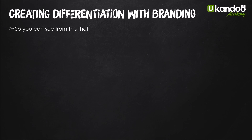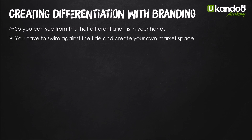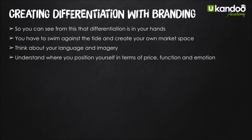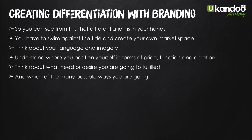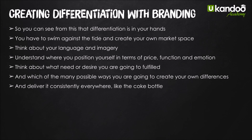Differentiation is completely in your hands. You have to swim against the tide to create your own space in the market. Think about your language, your imagery, and how you're going to make your brand different. Understand where you position your brand in terms of price, function, and emotion. Think about what desire or need you're going to fulfill, and which of the many possible ways you'll use to create your differences. They don't need to be massive — just different. And like the Coke bottle, you need to deliver it consistently, everywhere. Consistency is the secret of branding. In the next lesson we'll look further at brand values, cover the word 'quality,' talk about making mistakes, and why logos are less important than feelings.